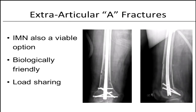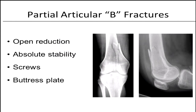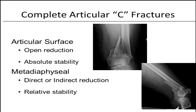Traditional plating is one option, but I prefer retrograde nails for type A fractures because of the limited soft tissue compromise — it's a more biologically friendly construct. Even with a type C fracture, the goal is to convert it to an A so you can treat it accordingly — reduce the intercondylar component and simplify so a nail can be used. Type B fractures require screws and buttress plating, and for type C, you can pursue absolute stability but you must address the joint.